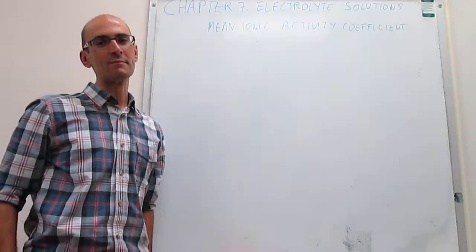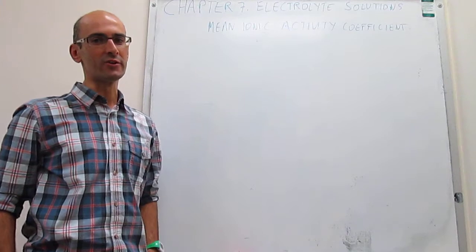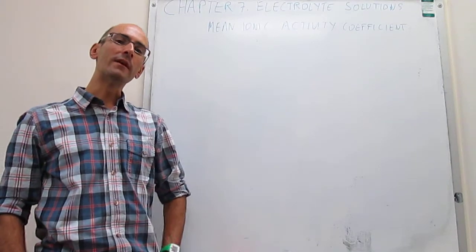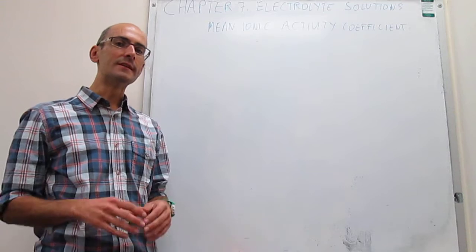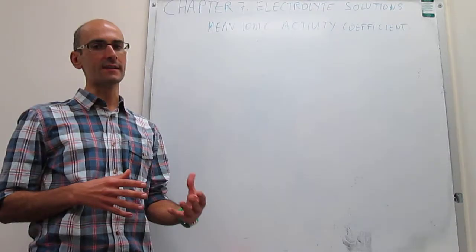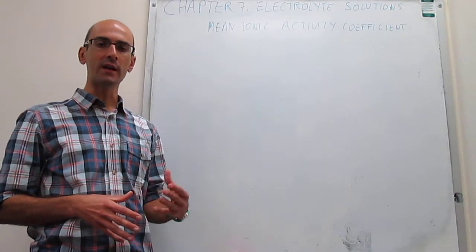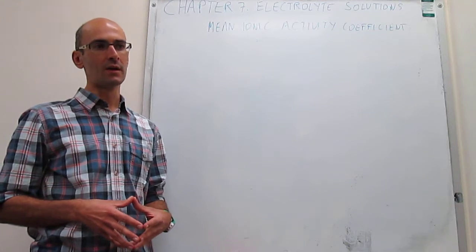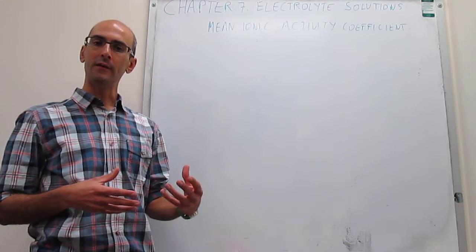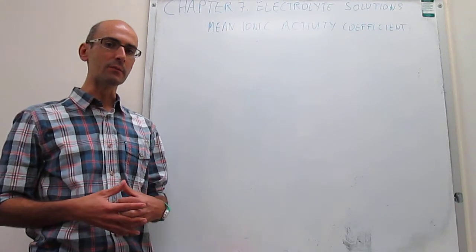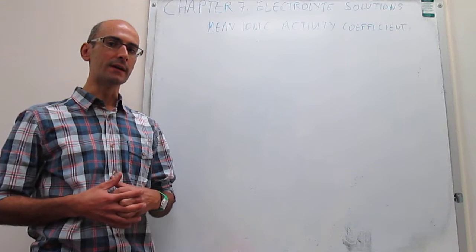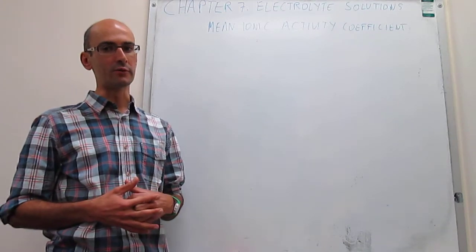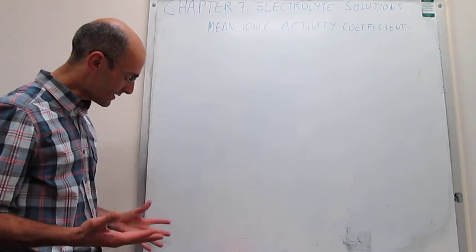This video explains the concept of the mean ionic activity coefficient. One of the main concepts of electrolyte solutions is that they tend to deviate from ideality to a larger extent than non-electrolyte solutions. The way that we can take care of this problem is by using something called the activity coefficient of the ion.